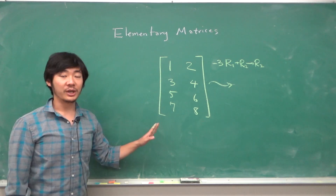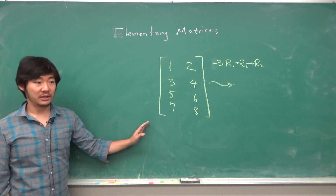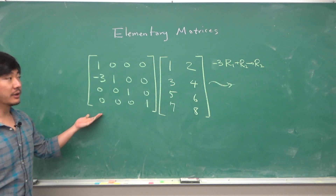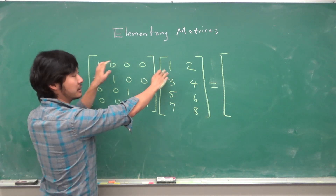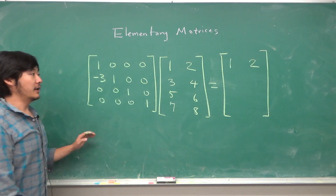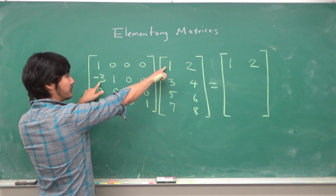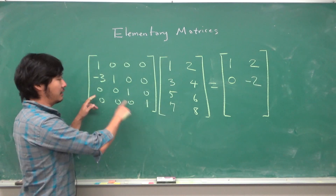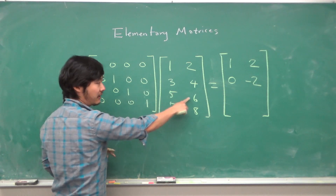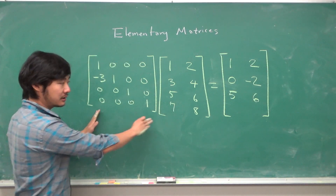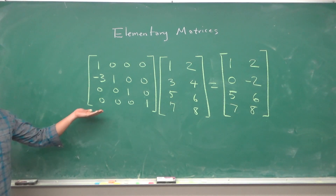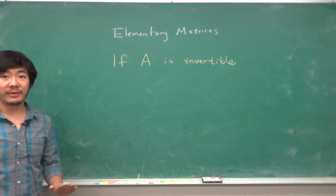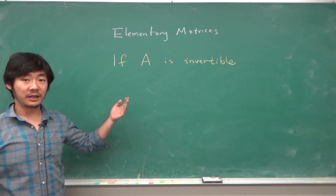What is the elementary matrix that would take negative three times the first row and add it into the second? Because this matrix has four rows, we need to multiply by a four by four elementary matrix. If we do this matrix multiplication: the first row, one zero zero zero, means you only get the first two entries. In the second row we'll have negative three times one plus three, which is zero, and negative six plus four, which is negative two. The other rows follow similarly, and we can see that multiplication by this elementary matrix gives us the corresponding row-operated matrix.